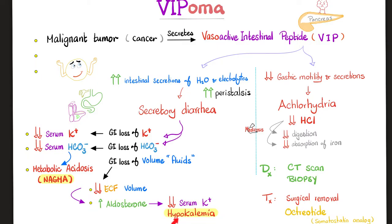Hypokalemia is not good for your heart — if you have a kalium problem, you get cardiac issues like arrhythmias. In addition, VIP inhibits gastric motility and secretion, leading to no secretion of hydrochloric acid — achlorhydria.